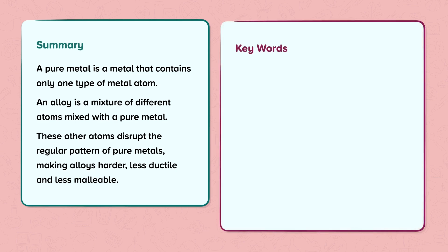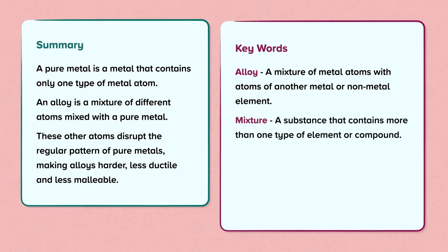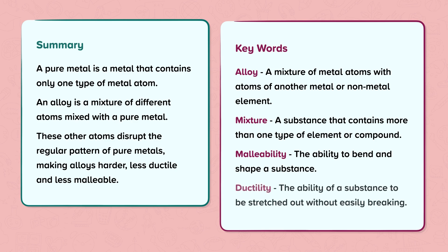Key words. Alloy: A mixture of metal atoms with atoms of another metal or non-metal element. Mixture: A substance that contains more than one type of element or compound. Malleability: The ability to bend and shape a substance. Ductility: The ability of a substance to be stretched out without easily breaking.